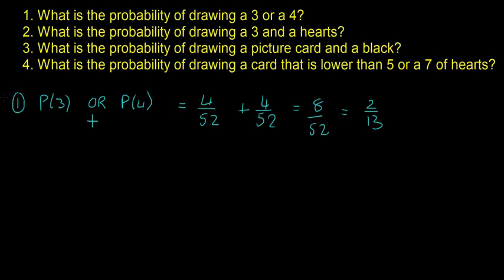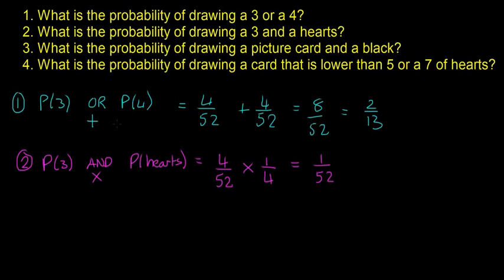Question two. What is the probability of drawing a 3 and a heart? So P of 3 AND which means multiply P of hearts. The probability of the 3 hasn't changed, it's still 4 over 52. And we're going to multiply this by the probability of getting a heart, which is 1 over 4. And then the entire probability will just be 1 over 52. Hopefully that makes sense. Every time you see OR it's going to be plus, and every time you see AND it's going to be multiply.